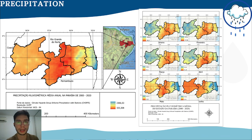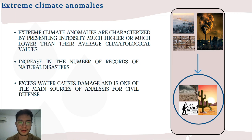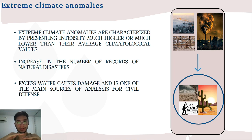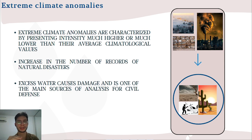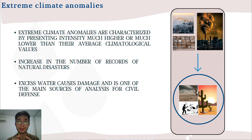Let's talk about extreme climate anomalies. Extreme climate anomaly events are characterized by presenting intensity much higher or much lower than the average climatological values. When it is much higher than normal or much lower than normal, we say we have extreme climate anomalies. A drought is an extreme climate anomaly. A flood is an extreme climate anomaly, because it is extremely higher than normal.